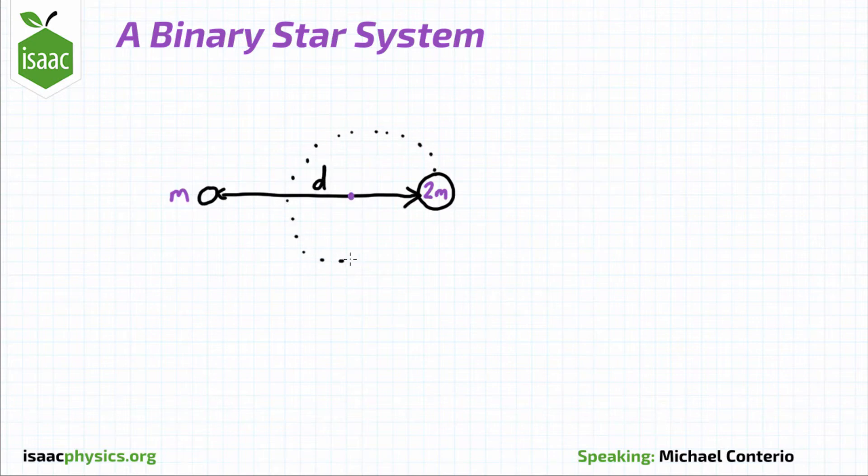These move in circular orbits about their centre of mass and have speeds in these orbits u and v.